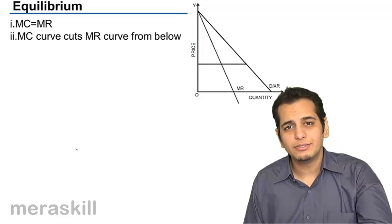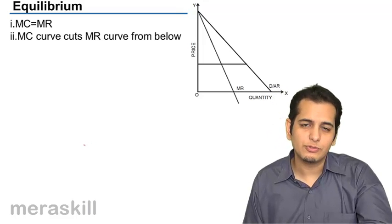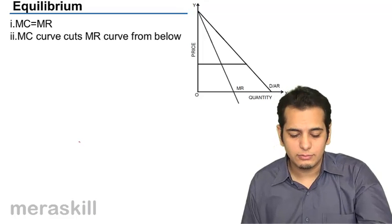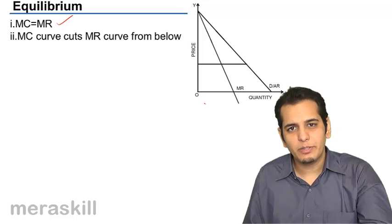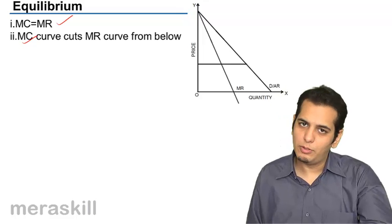Now, let's see the conditions for achieving equilibrium for the firm operating in monopoly in the short run. The two conditions remain the same: MC should be equal to MR, and MC should be cutting the MR from below.